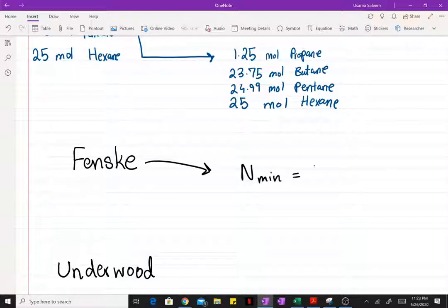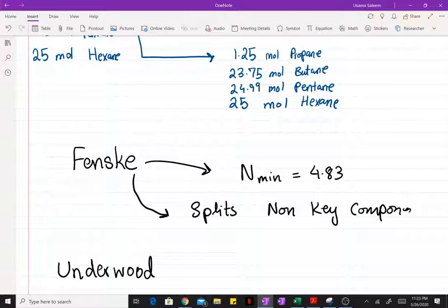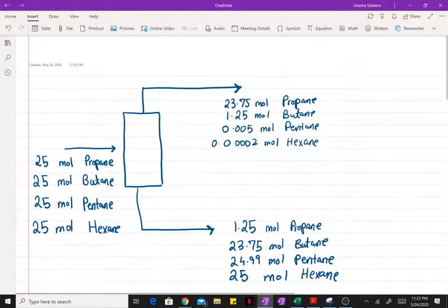We also used the Fenske equation to find the splits of the non-key components, as you can see here.